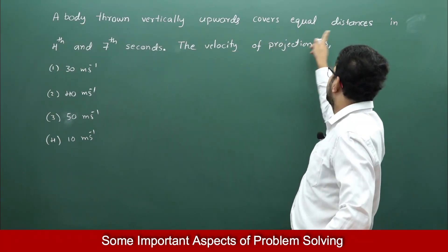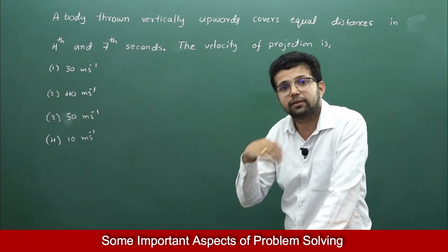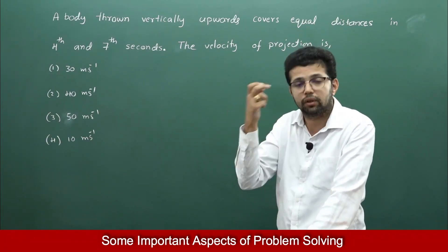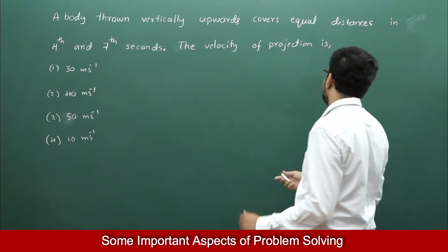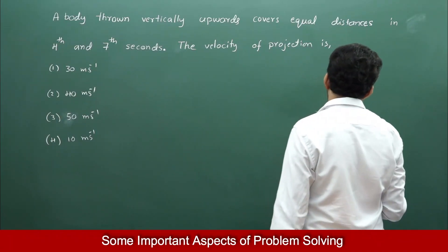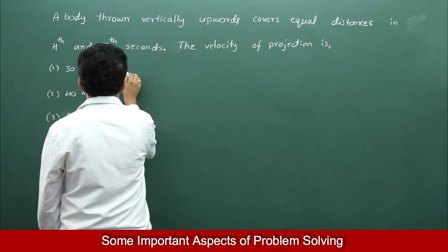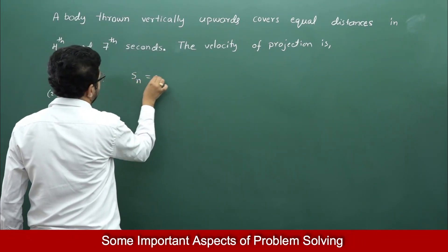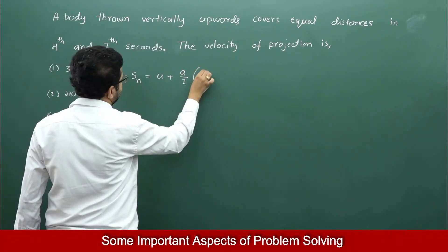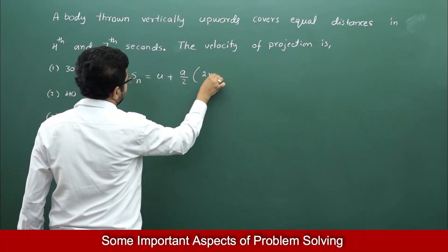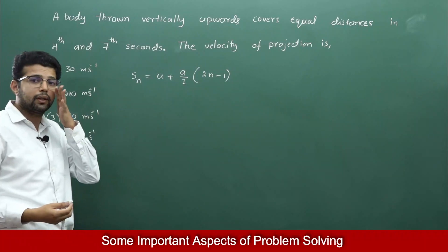Because they are speaking about the distance travelled in the 4th second and the 7th second — that is, distance travelled in the nth second. So you will remember the equation Sn = u + (a/2)(2n − 1). We will see how to solve this problem using this equation.